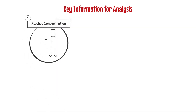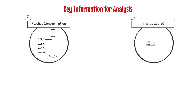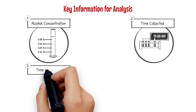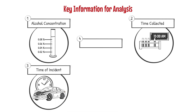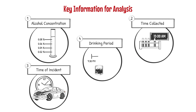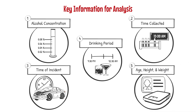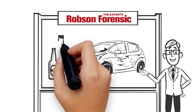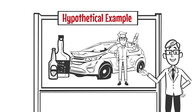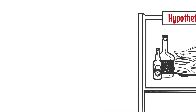In order to complete our analysis, toxicologists typically need some key pieces of information, which may include: one, the alcohol concentration in blood or serum; two, the time the blood or serum was collected; three, the time of the crash incident; four, the time of the last drink served and drinking period — timestamps, receipts, and/or video can be helpful here; and five, the person's age, height, and weight.